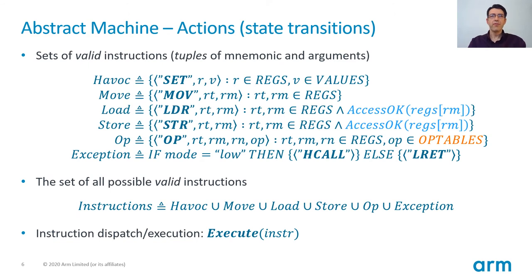With the system variables defined, we need a set of actions to transition between states. We'll use tuples of instruction mnemonics and arguments for modeling the program execution. We have a Havoc subset of instructions that set the register state to a specific value. The move instructions copy a value from a register to another. Memory accesses are only permitted if the current privilege mode allows loads and stores to specific memory locations. For example, the access-ok operator will not allow a low privilege mode to read or write high addresses. The op-subset contains all possible instructions that take values from two source registers and combine them into a new value stored in a destination register.